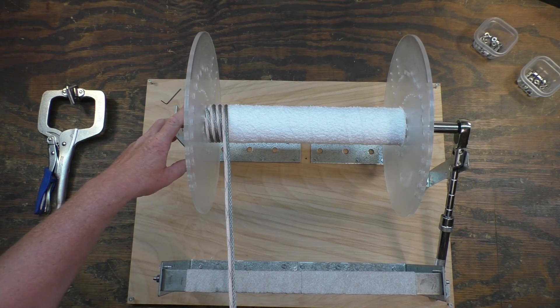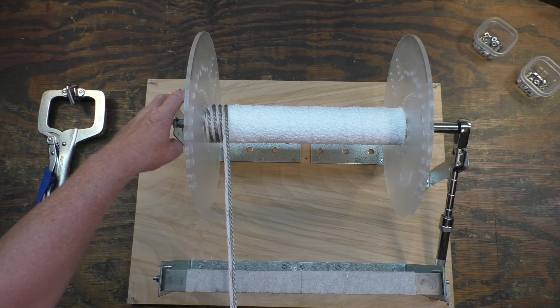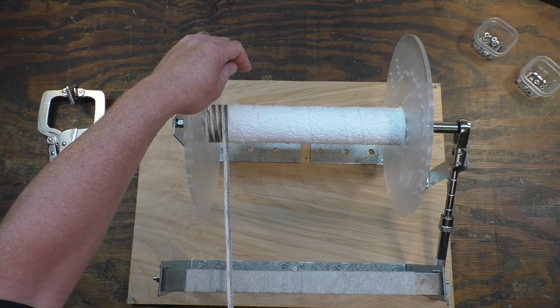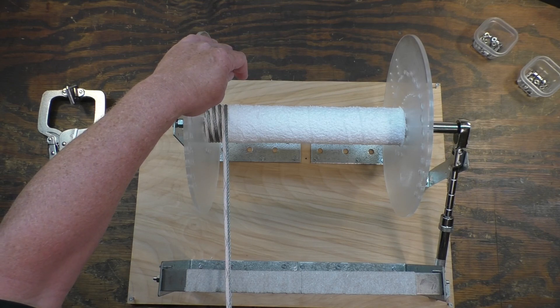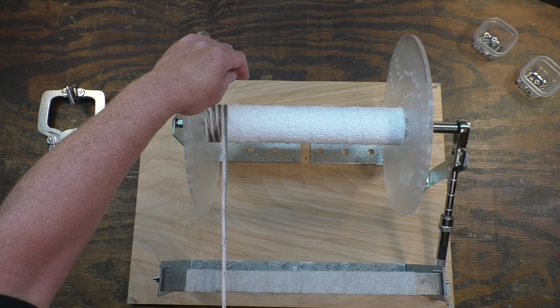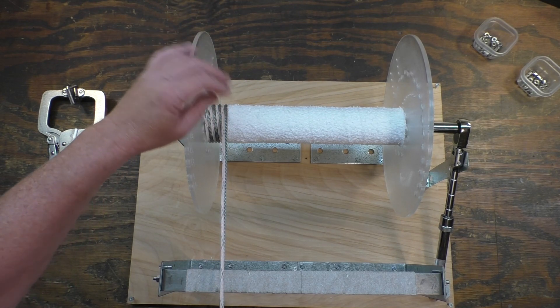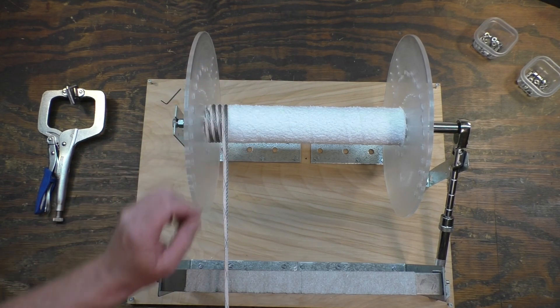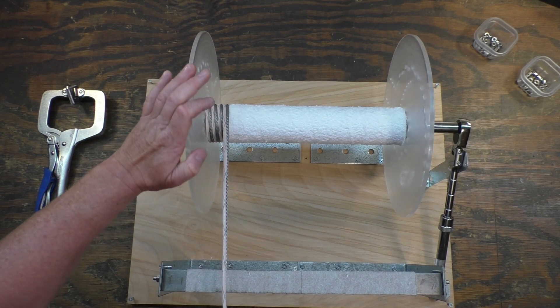One thing I don't think I mentioned was the 3-16ths locking collars that I used for the cable, I drilled those out to 13-64ths. It needed just a little bit more room to get over that cable wire, because its diameter is not 100% consistent, so now they slip over nice and easy and lock into place.